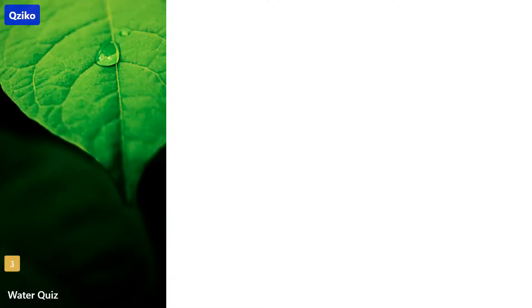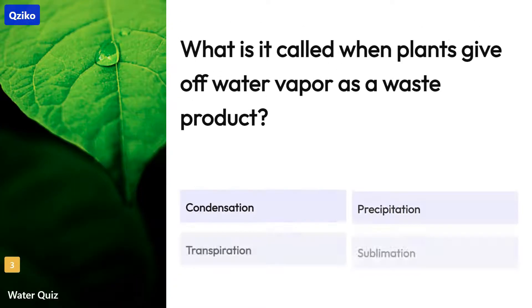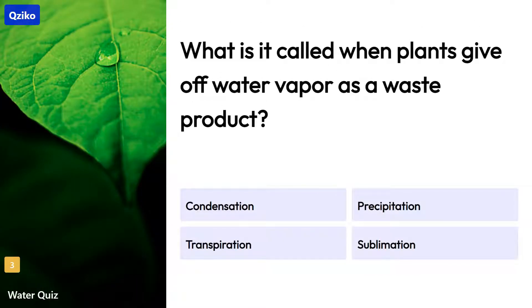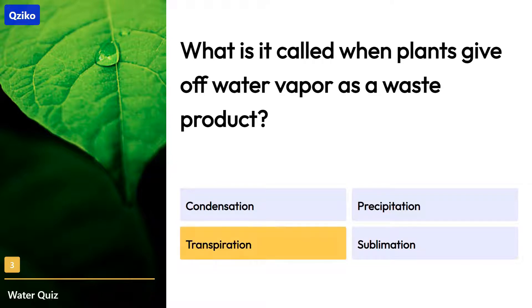Quiz number 3. What is it called when plants give off water vapor as a waste product? The right answer is transpiration.